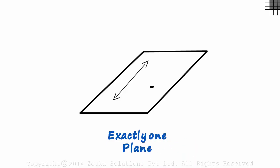It doesn't matter how you position the point or the line. You can move them both as you wish. You will always have one plane passing through them.